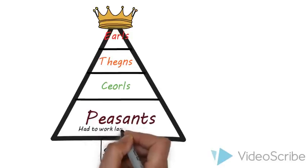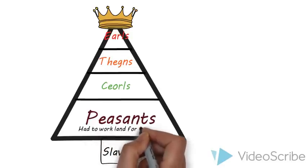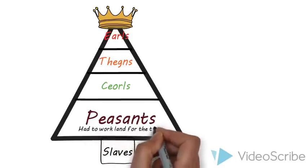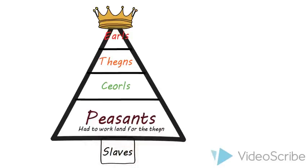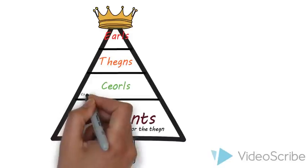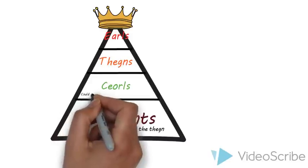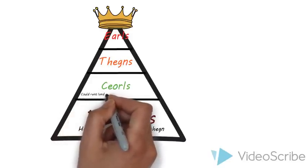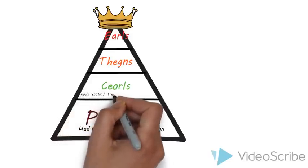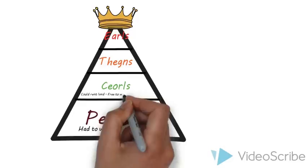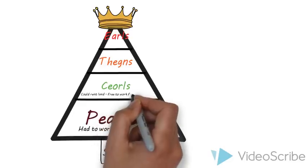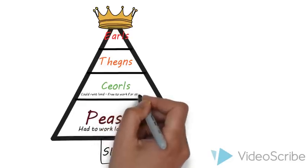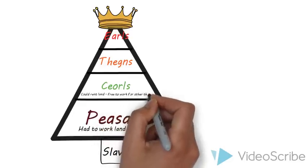Peasants had to work on the land of a particular thane; they weren't allowed to move off it at all. Whereas the churls were peasants who were slightly richer — they could rent land, and if they didn't like the thane they were working for, they could move to another thane's land.